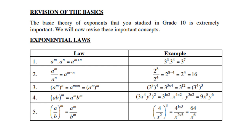Law number 3: a to the power m, further raised to another power n, is a to the power m times n — meaning you multiply the two exponents. For example, 3 to the power 3, all to the power 4, is 3 to the power 3 times 4, which is 3 to the power 12. You can also interchange the 4 and the 3.